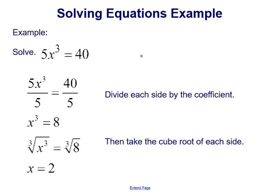Remember, in order to take the cube root, we have to see just x cubed equals a number. And right now, it's not just x cubed. It's x cubed multiplied by 5. So the first thing we need to do is divide by 5. We need to divide each side by that coefficient in order to get x cubed isolated by itself.